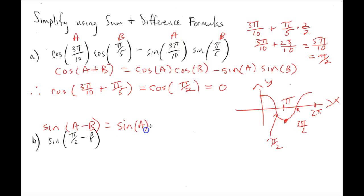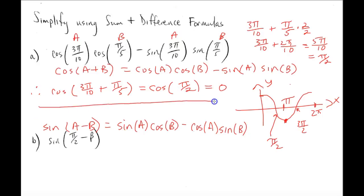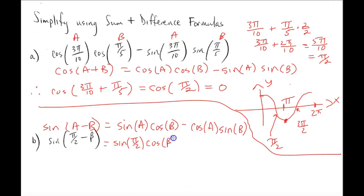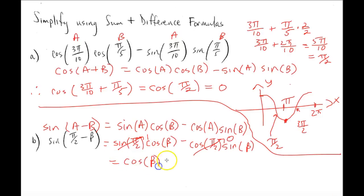So we have sine(A)cosine(B) minus cosine(A)sine(B). Plugging in, we get sine(π/2)cosine(β) minus cosine(π/2)sine(β). Cosine of π/2 is 0 and sine of π/2 is 1, so we just have 1 times cosine(β) minus 0, which simplifies to cosine(β).